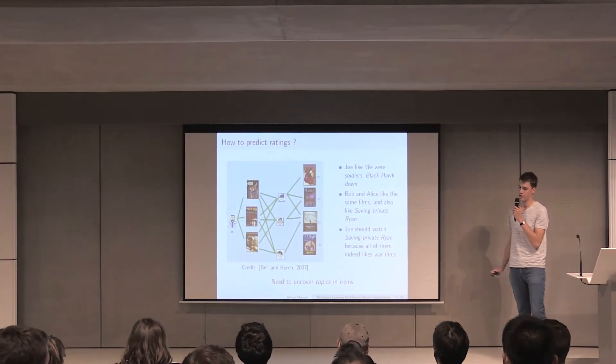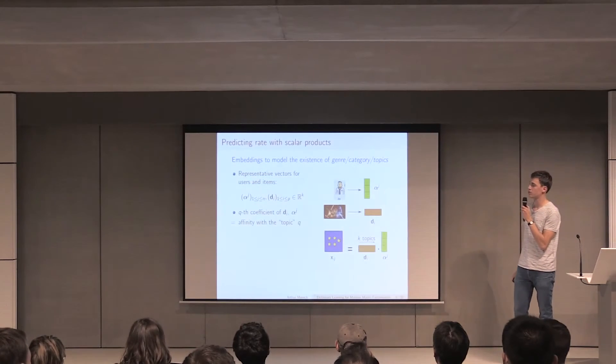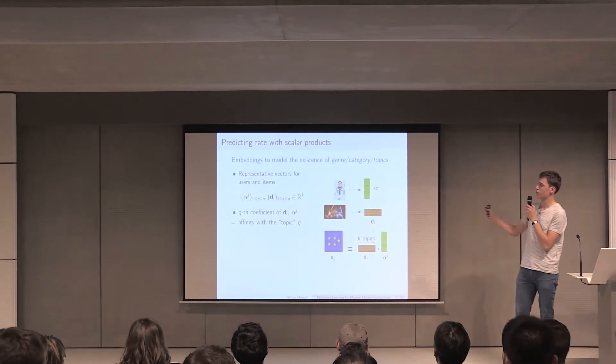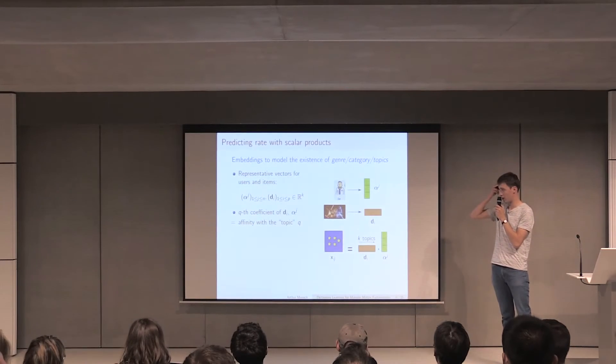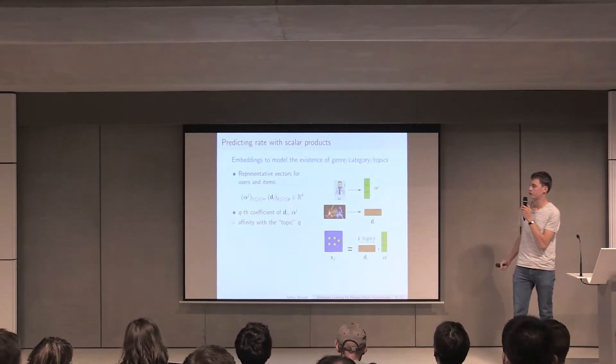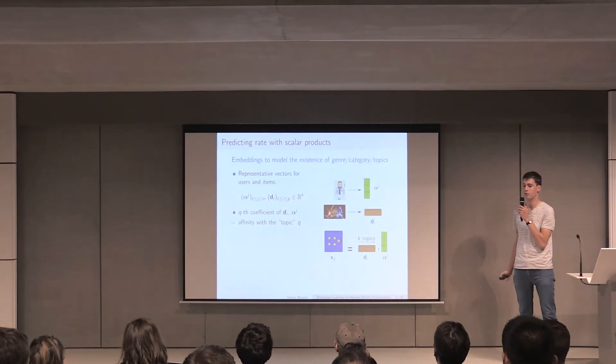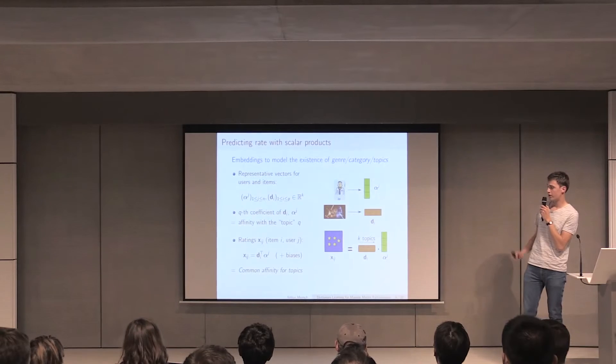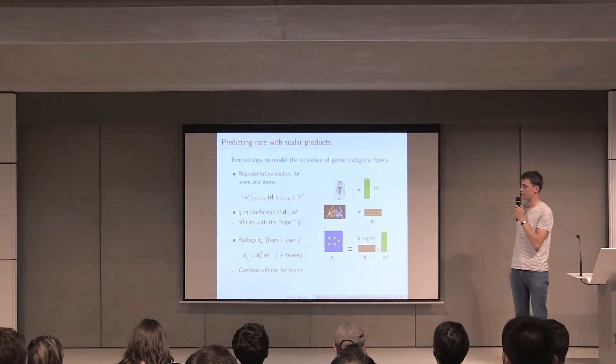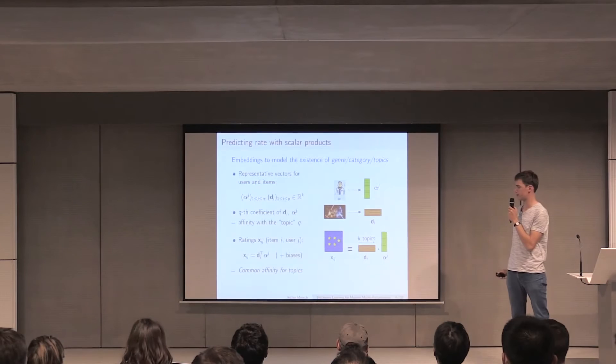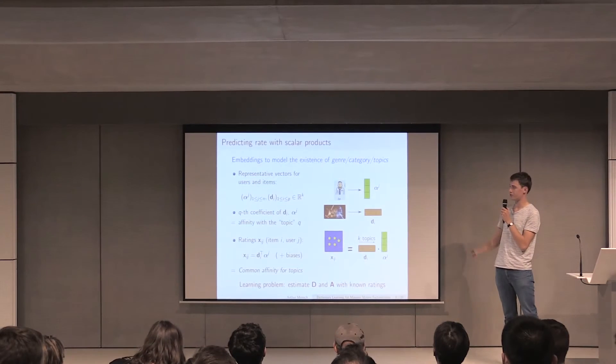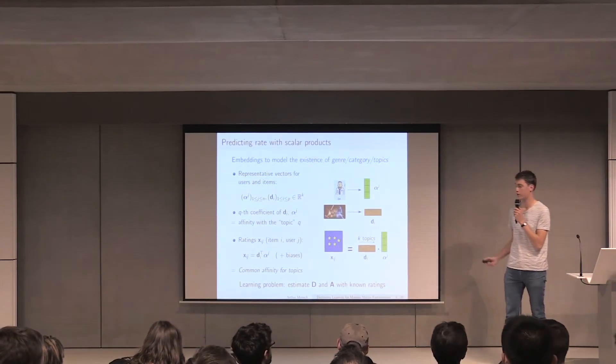What we see there is that we need to uncover topics in items, and this can be formalized by matrix factorization. The way I like to see matrix factorization is that we embed items and users in the same lower dimensional space. We have representative vectors for users and items that we call alpha and D, and they are in a space of dimension K. Typically the k-th coefficient of these vectors is the affinity with topic k, and you produce the ratings, the interaction between items and users by doing a scalar product and adding biases, and this allows us to know the common affinity between a user and an item.